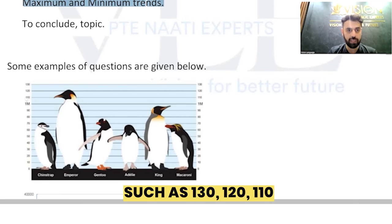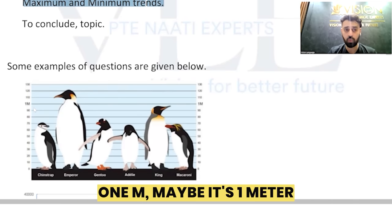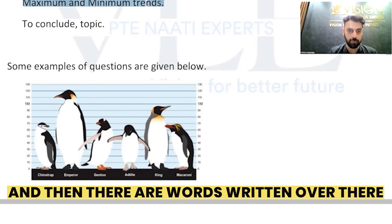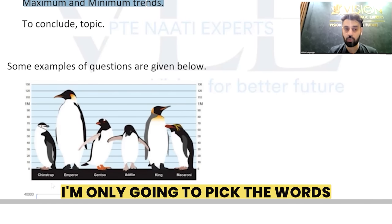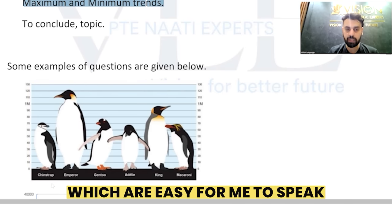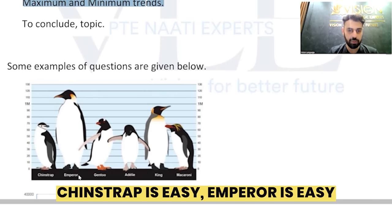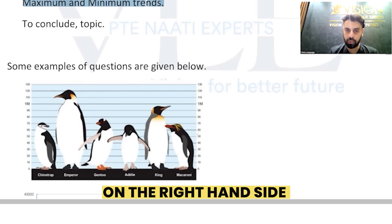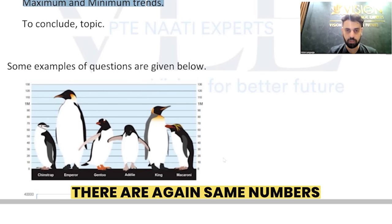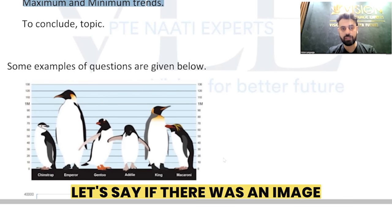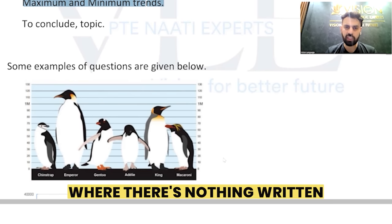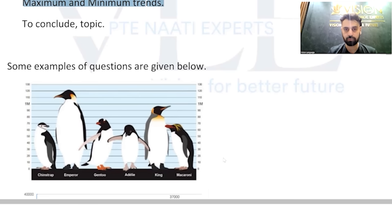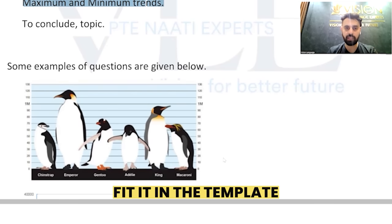The numbers on the image include 130, 120, 110, 1M (maybe one meter), 90, 80, 70, 60, 50, 40. Then there are words written — I'm not going to pick all of them, only those easy for me to speak: chin strap, emperor, gentoo, king, macaroni. On the right-hand side there are the same numbers again, so I'll skip that. If the image has nothing written, just note down whatever you can see so you can fit it into the template.